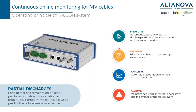By measuring the partial discharge activity we are at the same time measuring the condition of the joints and terminations of the cables. This device not only performs the measurement but also saves it — there is a built-in memory able to save measurements and then plot graphs. Because of these graphs it's possible to make analysis, and if a defect is identified and worsening, an alarm will be issued so operators will be informed by Falcon.